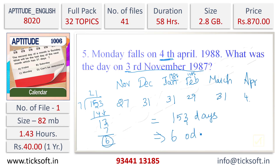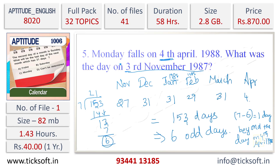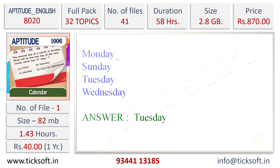The remainder is the required number of odd days, which is 6. Therefore, the required answer is 7 minus 6, which equals 1. So the answer is 1 day beyond the day on 4th April 1988. Since 4th April is Monday, 1 day beyond Monday is Tuesday. Hence, option C — Tuesday — is the correct answer. This completes the 5th question.